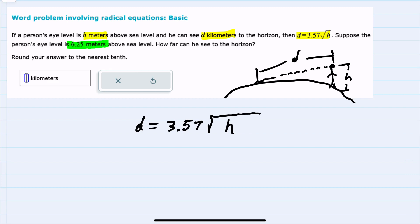So if we're looking for d, how far they can see, and we're given h is 6.25, we can do that substitution. d equals 3.57 times the square root of h, where h is 6.25.